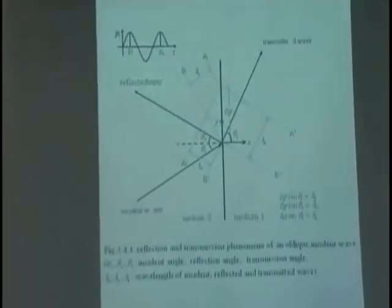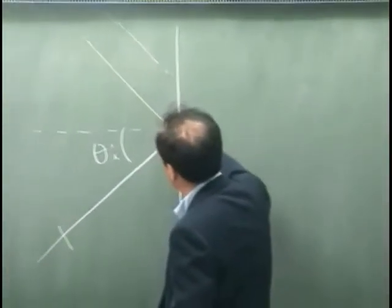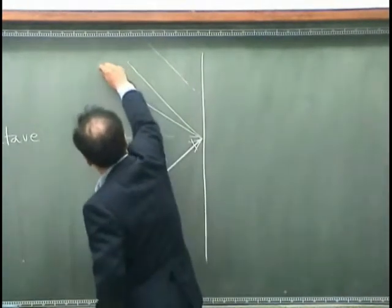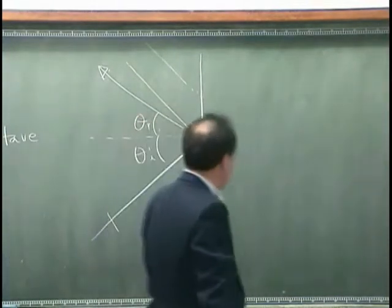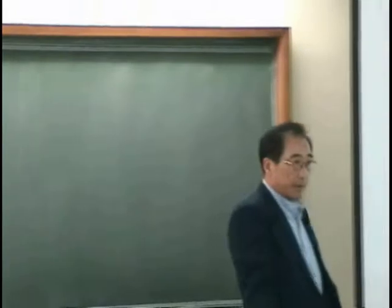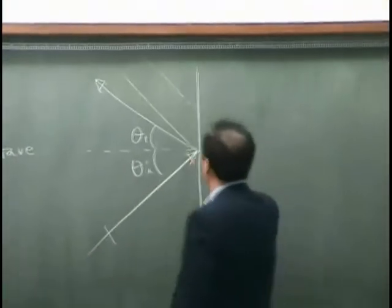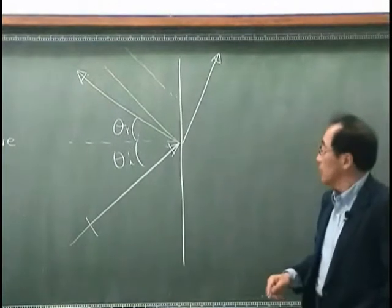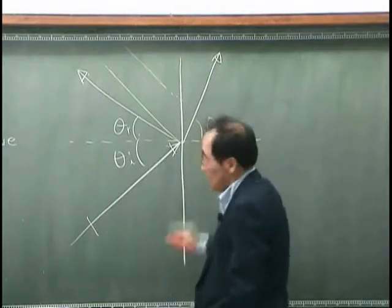And then due to the discontinuity over here, this wave will go like this. Let me call this theta r. And the wave would be transmitted in this direction. And we define this as transmitted angle theta t.